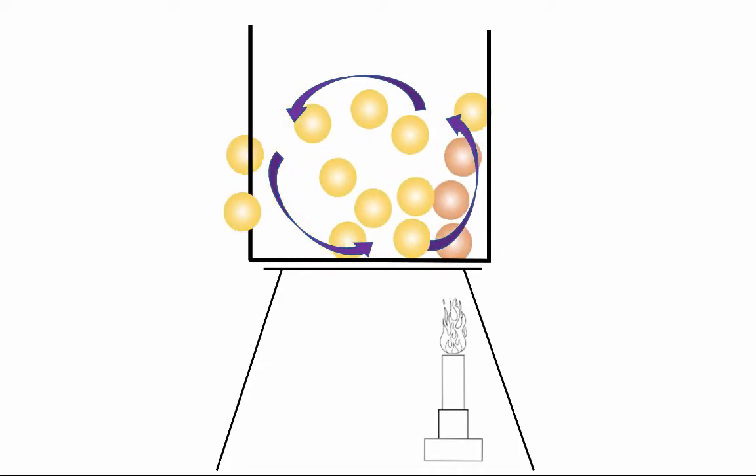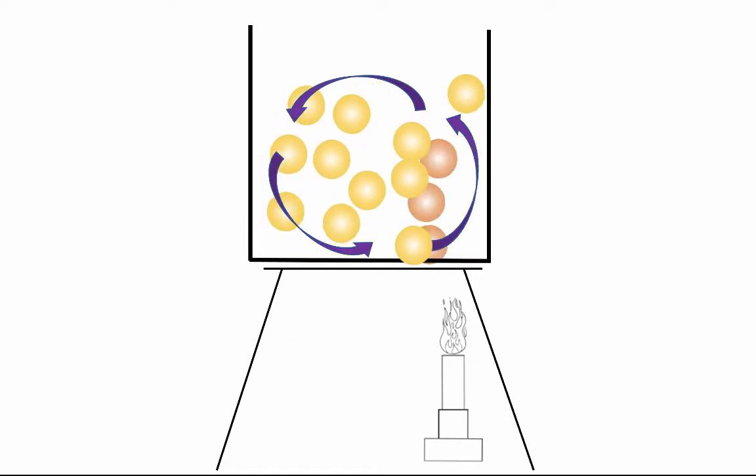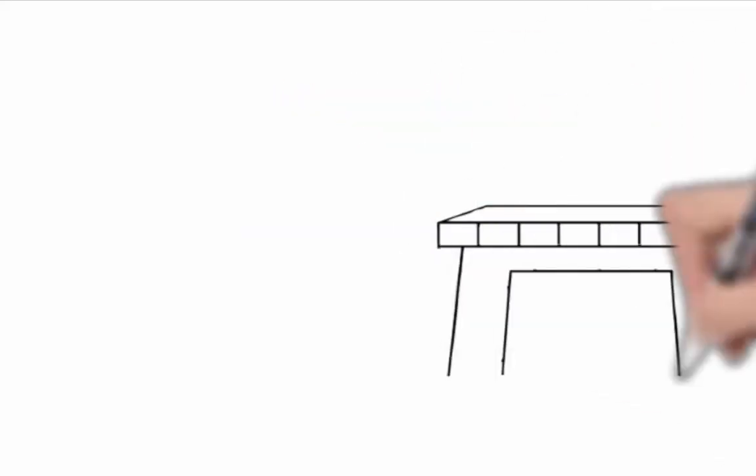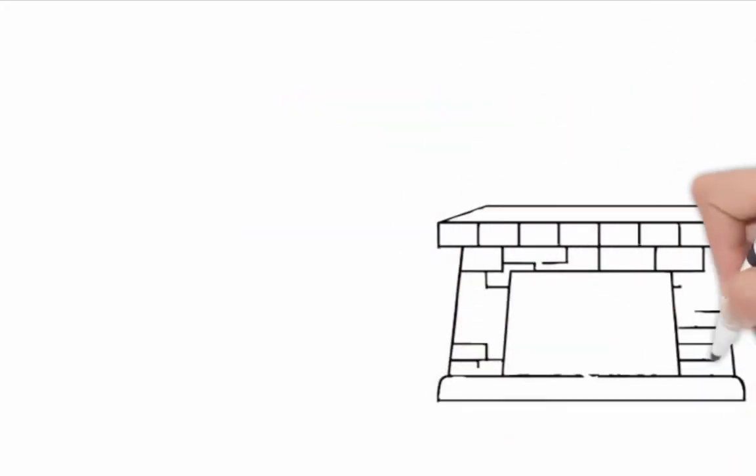This convection current allows for the whole liquid to heat up as the particles move across the flame and continue in that circular motion. This will continue until all of the particles are about the same temperature and the whole liquid itself will heat up together.